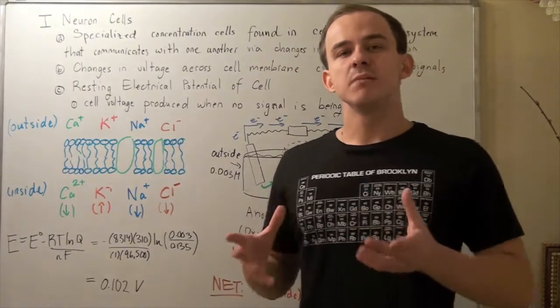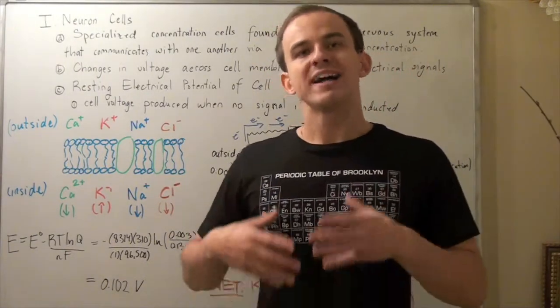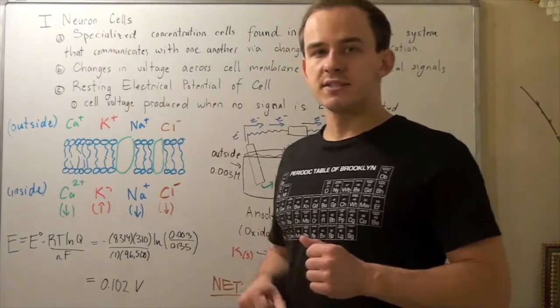So, there are many different examples of concentration cells. Today, we're going to look at a very important biological example of a concentration cell called a neuron cell.